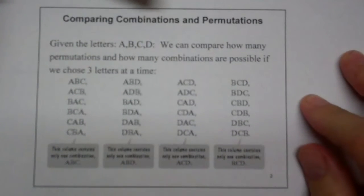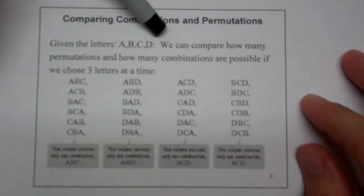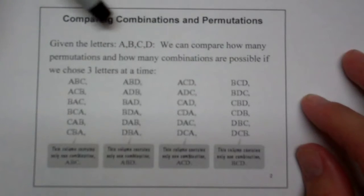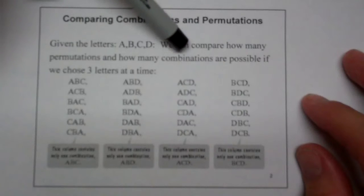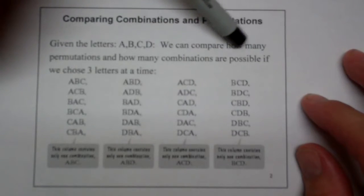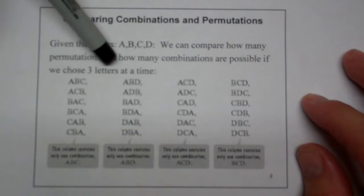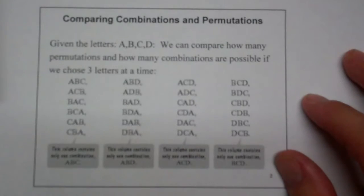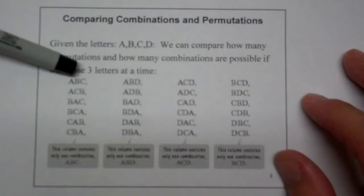Let's look. If you're given A, B, C, and D, we can actually compare how many permutations and how many combinations are possible if we choose three letters at a time. And if you choose the first three letters, A, B, and C...